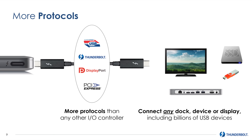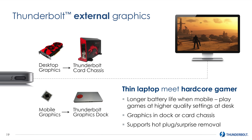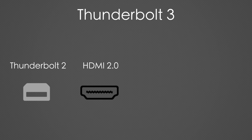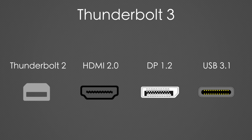Thunderbolt 3 continues to support DisplayPort with an adapter, and now gains support for PCI Express 3.0, allowing users to connect a video card by using a Thunderbolt 3 external GPU enclosure, though support even in Windows is tricky. Simply put, Thunderbolt 3 contains Thunderbolt 2, HDMI 2.0, DisplayPort 1.2, and the USB 3.1 protocol, and all that that entails.